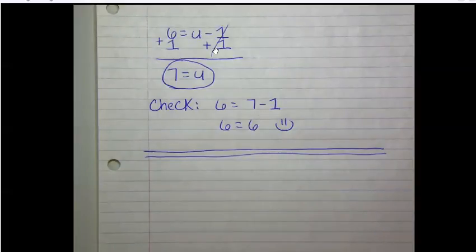And so if I add 1 to one side to keep this equal, I have to add 1 to the other side. And so these cancel out so I just have U over here by itself and 6 plus 1 is 7. And to check this to make sure it's the correct answer, I can plug 7 in for U into the original equation. And so does 6 equal 7 minus 1? And so when I compute this on the right side, 7 minus 1 is 6. Then I end up with 6 does equal 6 and it checks out. And so 7 is my final answer.